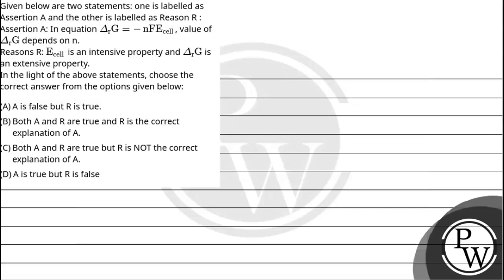Hello, let's read the question. Given below are two statements, one is labeled as Assertion A and the other is labeled as Reason R. Assertion A: In equation ΔG = -nFEcell, value of ΔG depends on n. Reason R: Ecell is intensive property and ΔG is extensive property. In light of the above statements, choose the correct answer from the options given below.